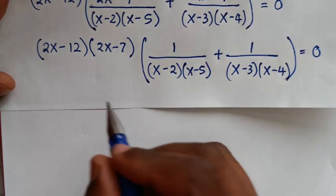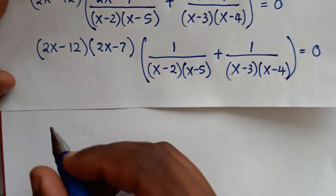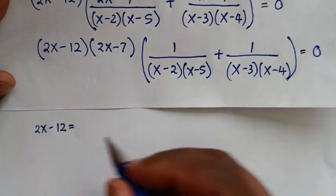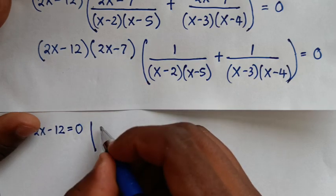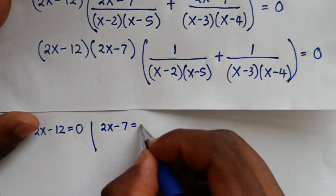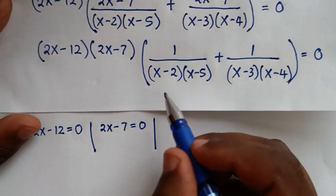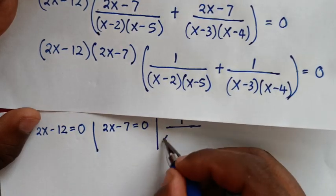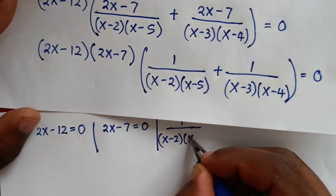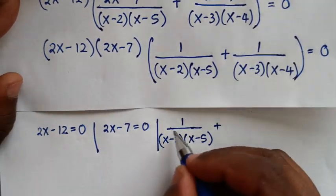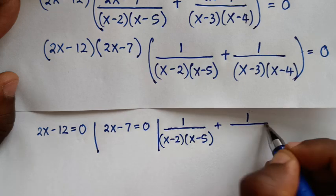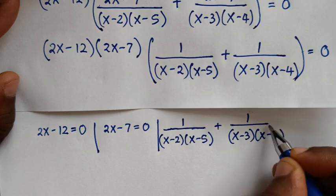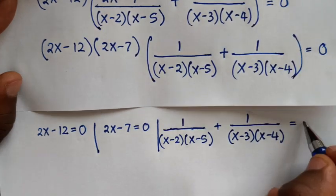In the next step, 2x minus 7 is common inside the bracket, so we factor it out. This gives 2x minus 12 times 2x minus 7 times the bracket 1 over (x minus 2)(x minus 5) plus 1 over (x minus 3)(x minus 4), equals 0. From here we have three solutions.